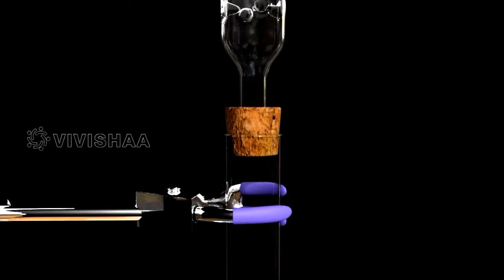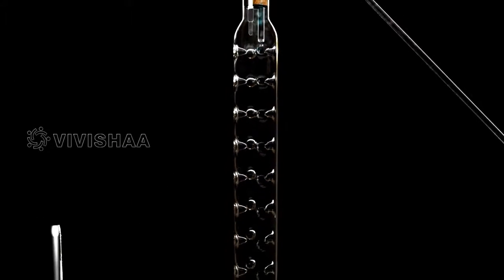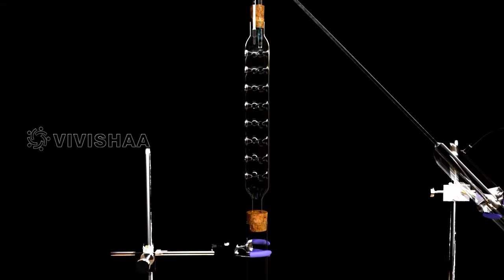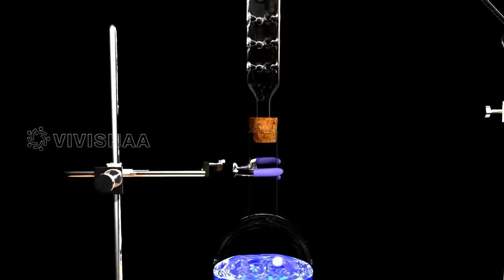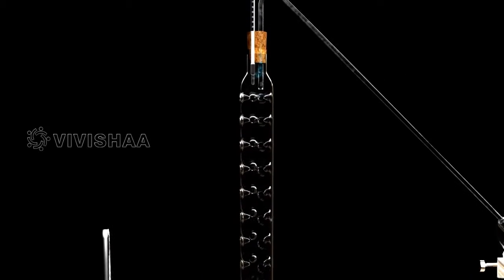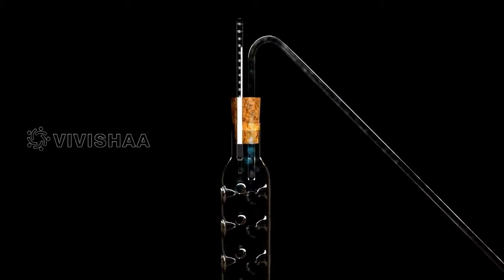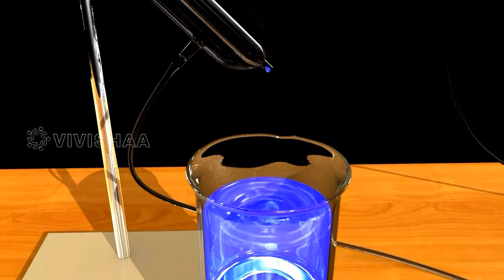Ethanol vapors rise up and condense in the fractioning column and vaporize all over again. After a continuous cycle of vaporization and condensation, ethanol flows through the condensing unit and gets collected in the collecting vessel.